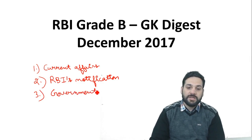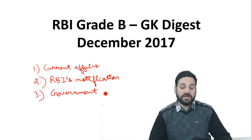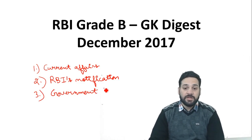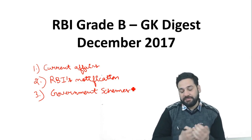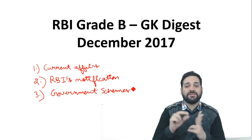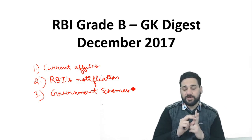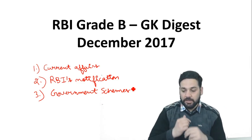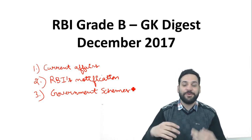The third and most important part is related to government schemes — all the schemes released in November and the first week of December. We have summarized all these schemes. So the whole digest has 3 parts: current affairs, RBI's notifications, and government schemes.